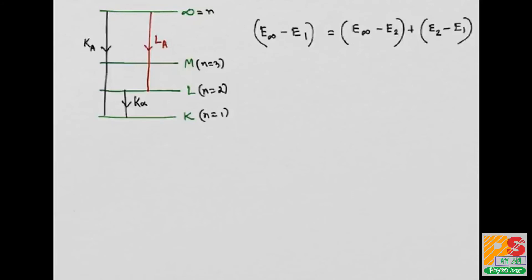For the transition from infinite state to 1 state it is hc divided by the wavelength of the K absorption line. For infinite to 2 state we write hc divided by the wavelength of the L absorption line. And for the transition from n equals 2 to n equals 1 we write hc divided by the wavelength of the K alpha line.